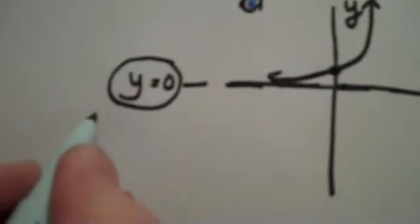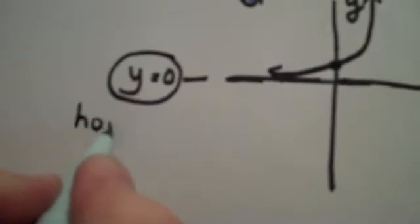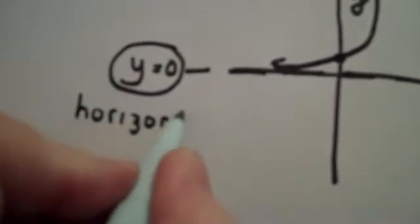The line y equals 0 is actually my horizontal asymptote.